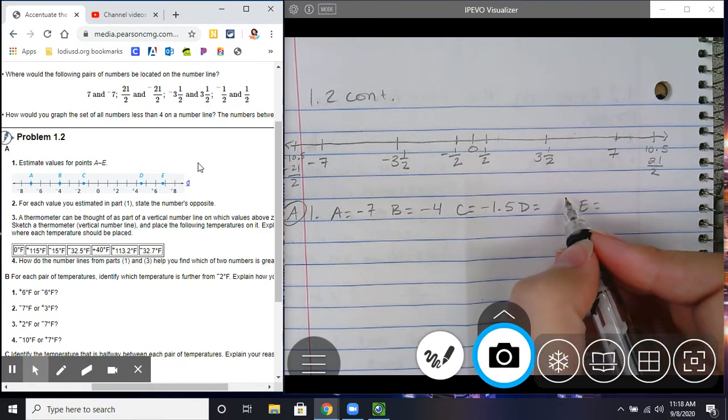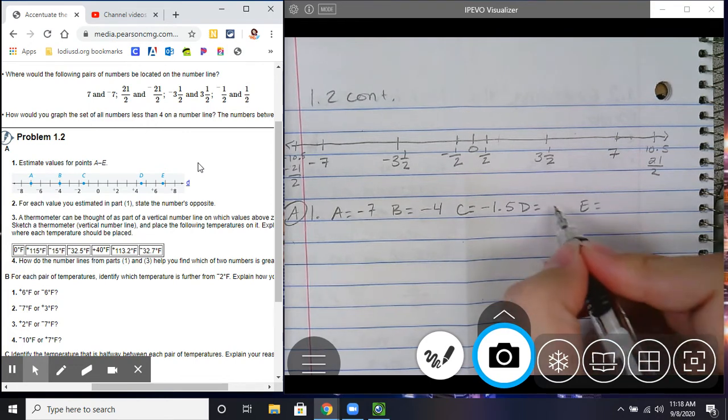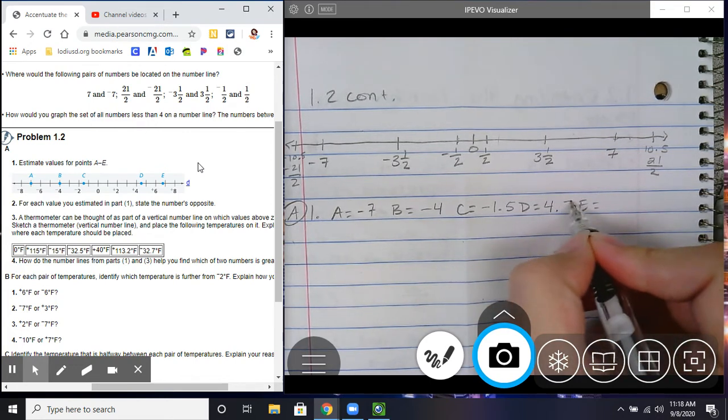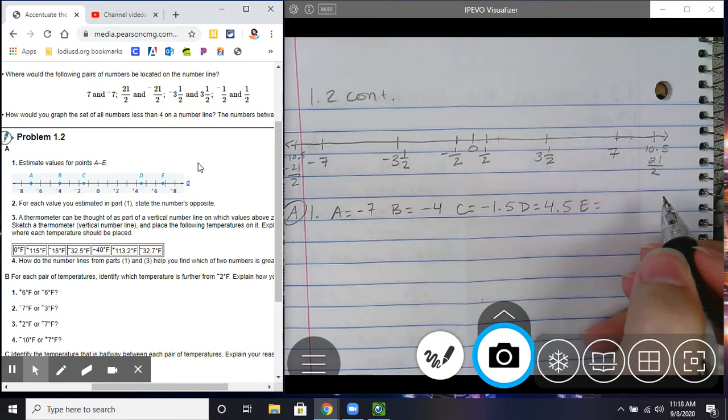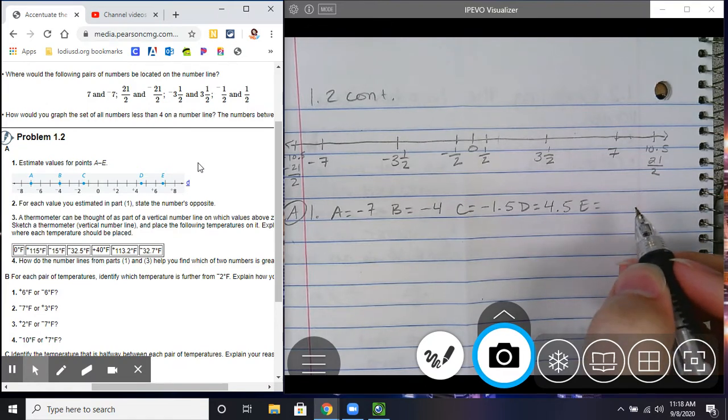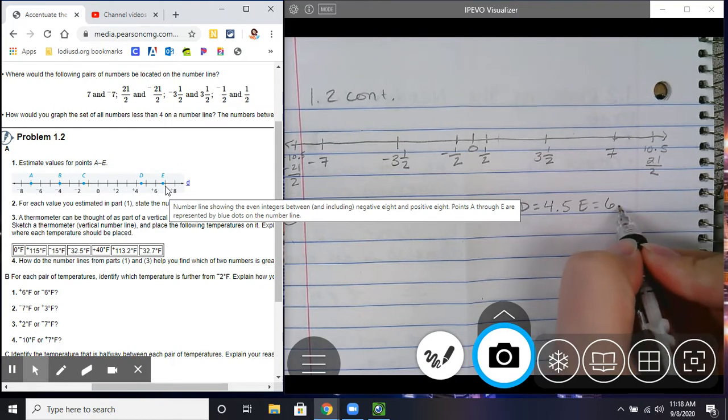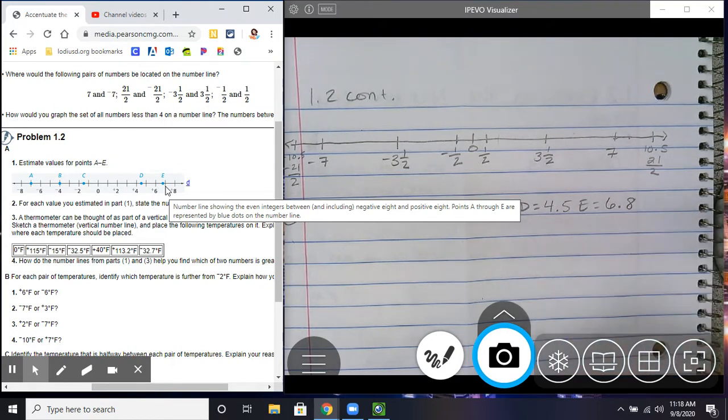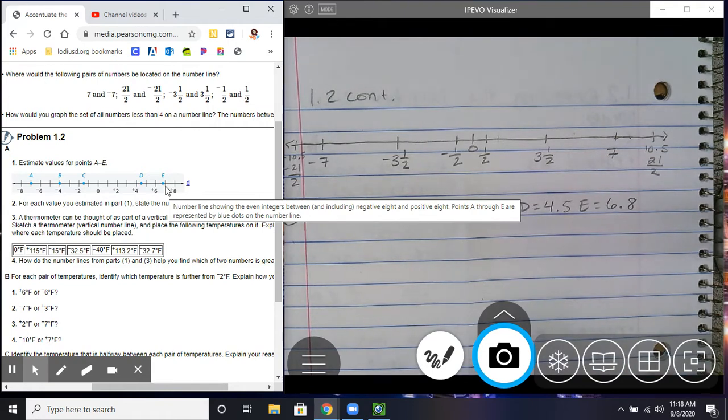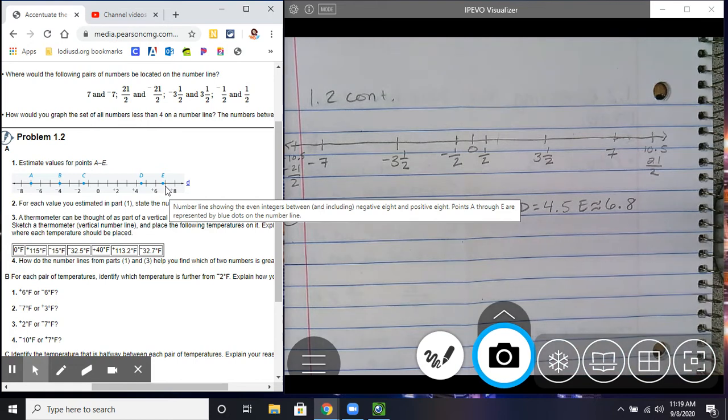D is between positive 4 and positive 5, so it's going to be 4.5. And then E is between positive 6 and positive 7, but it is clearly closer to positive 7 than it is to positive 6, so we're going to say positive 6 point, we'll say 6.8 approximately. If you want, you can do the approximately lines that are two squiggles like that, okay?